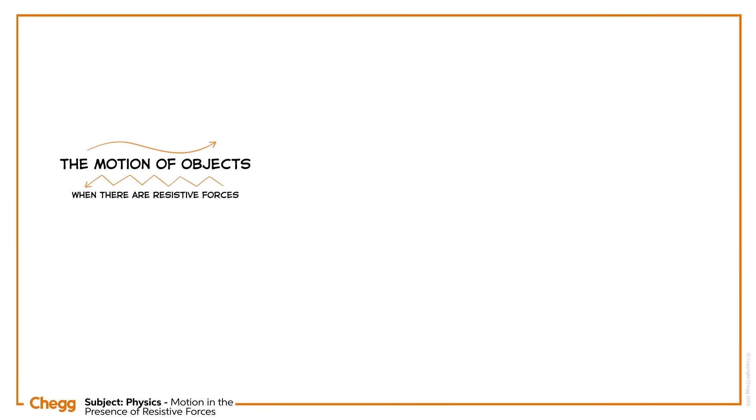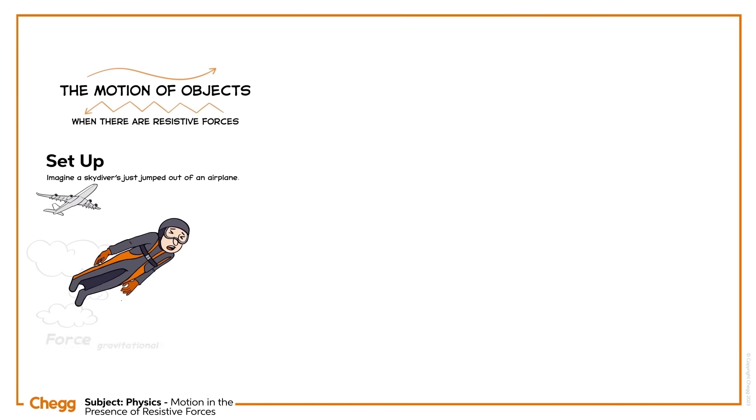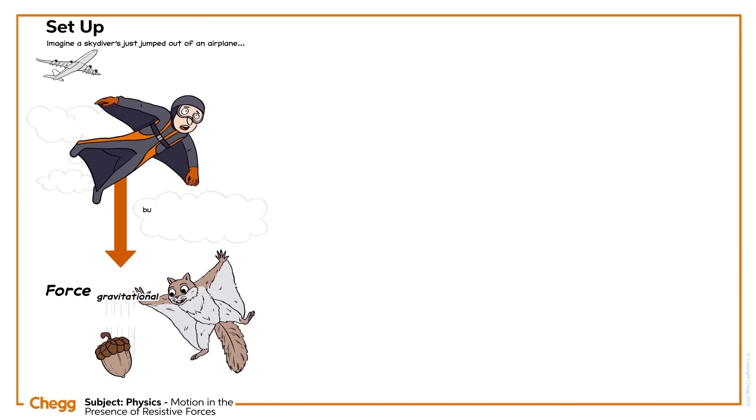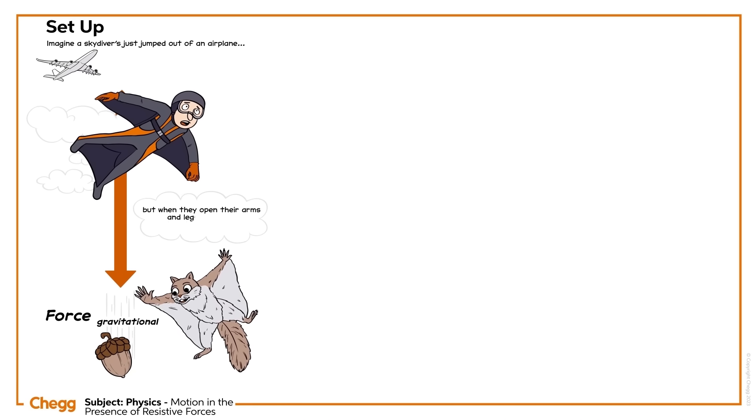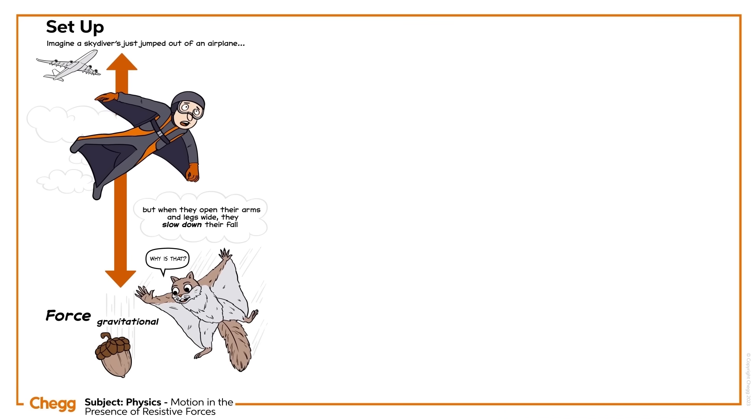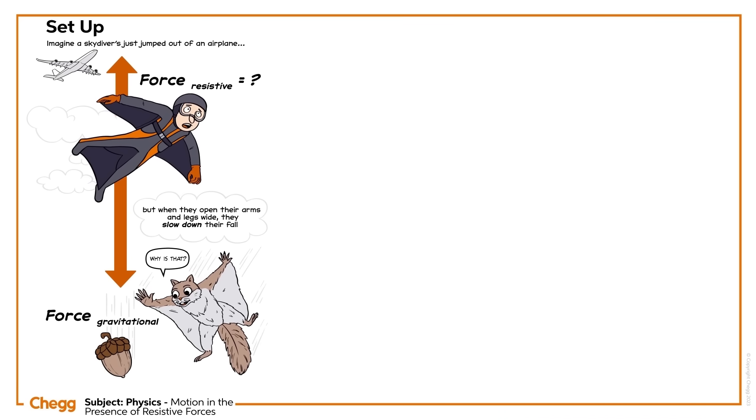Hi there! In this video we'll be learning about the motion of objects when there are resistive forces present. Imagine a skydiver has jumped out of an airplane. They're in free fall and have a squirrel suit on. But when they open their arms and legs wide, they slow down their fall. Why is that? Let's learn about resistive forces.